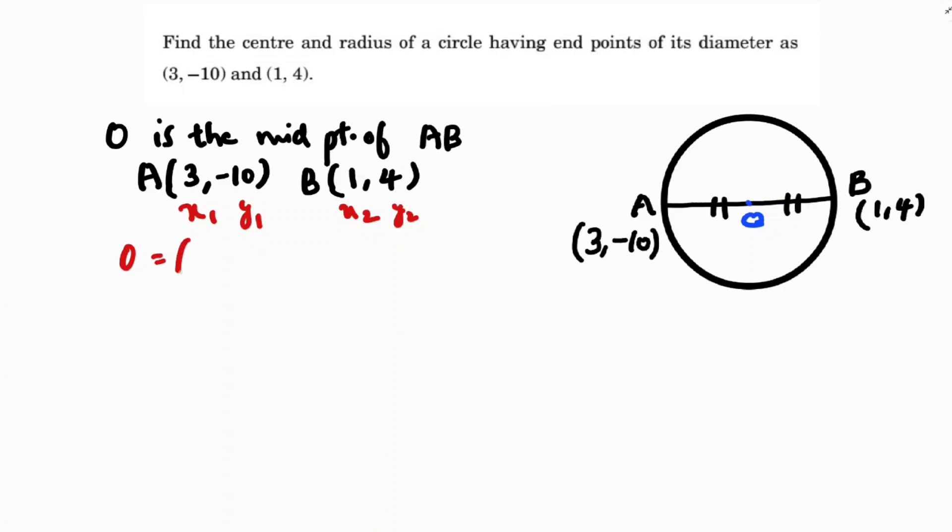And midpoint formula is (x1 + x2)/2, (y1 + y2)/2. So here x1, 3 + 1 by 2, -10 + 4 by 2.